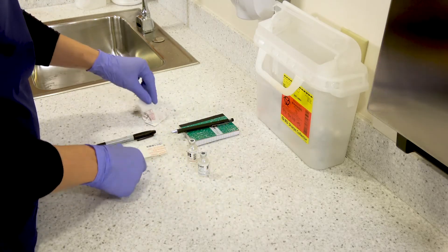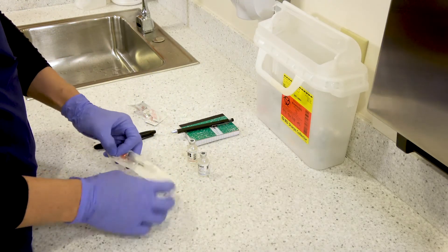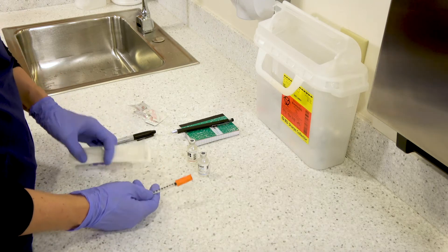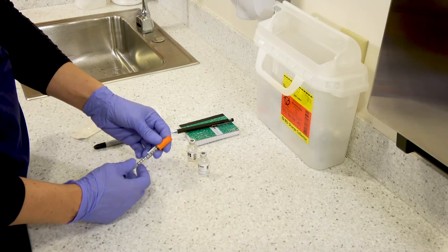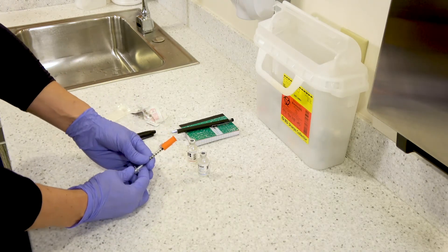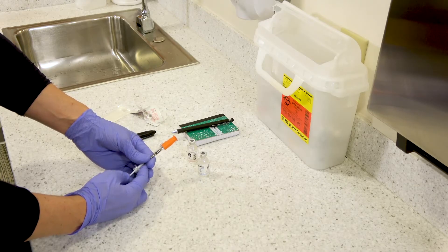Once you have your vials clean you want to grab your insulin syringe and then you're going to draw back the total amount of air that you need. So in this case that's going to be 15 units.